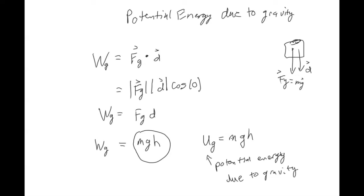We define mgh as the potential energy due to gravity. Here h is the height (distance in the y direction), g is the acceleration due to gravity (9.8 m/s²), and energy and work are very closely related — two sides of the same coin.